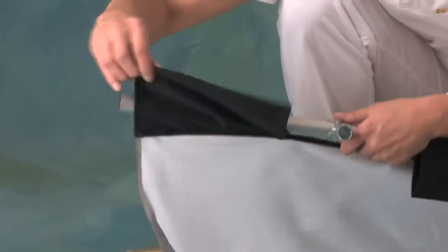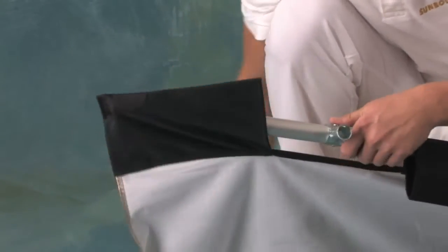Now pull the closed corners of the pockets over the pole ends such that the screen is taut. Repeat with the other side of the screen.